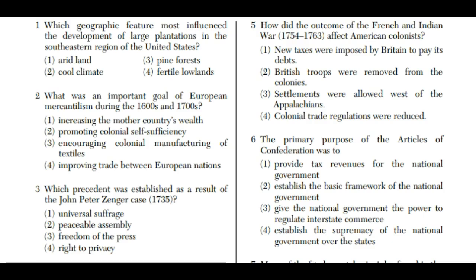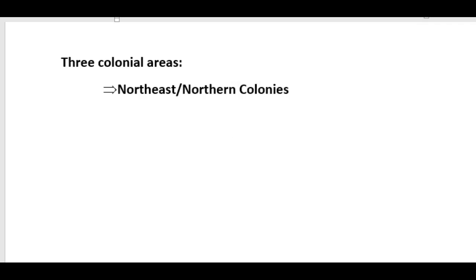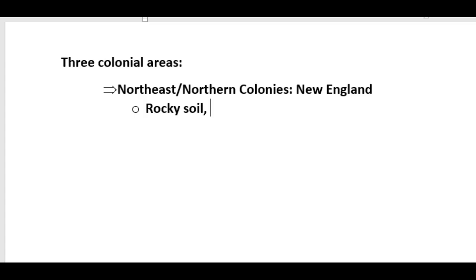Question one: which geographic feature most influenced the development of large plantations in the southeastern region of the United States? As we remember, there were three areas. The first were the Northeast, or Northern Colonies — that's New England primarily. They had rocky soil, not terribly fertile, long winters. Good for fishing.